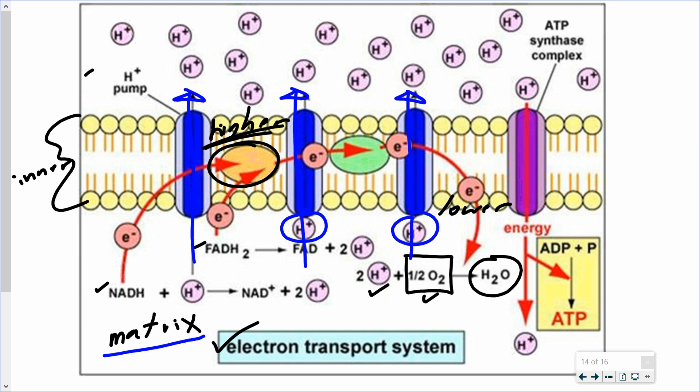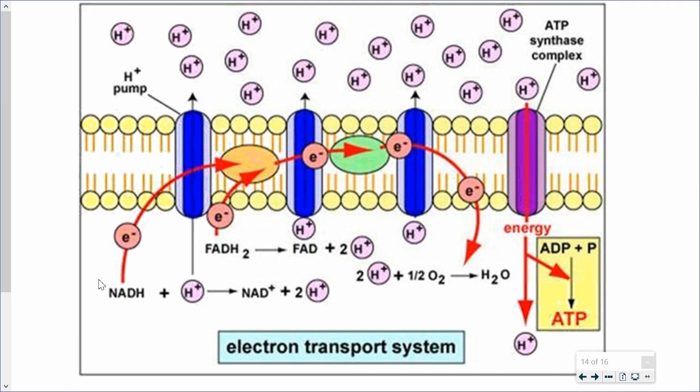concentrating the protons in the intermembrane space. And now what we have is referred to as an electrochemical potential. There are more hydrogen in the intermembrane space than in the matrix, so they want to go into the matrix. There are more positive charges in the intermembrane space than there are in the matrix, so they are also drawn into the matrix for that reason.